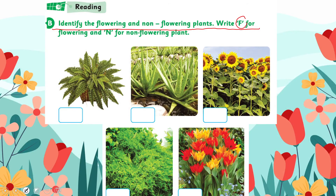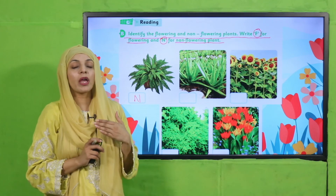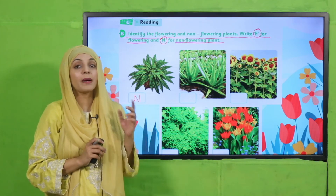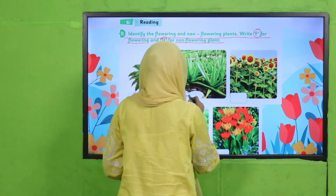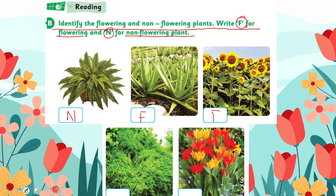The first plant is a fern — it is non-flowering, so write N. Aloe vera is actually a flowering plant; its flowers are seldom visible and appear very rarely, but it belongs to the category of flowering plants, so write F. Sunflower is a flowering plant — write F. Mosses are non-flowering — write N.